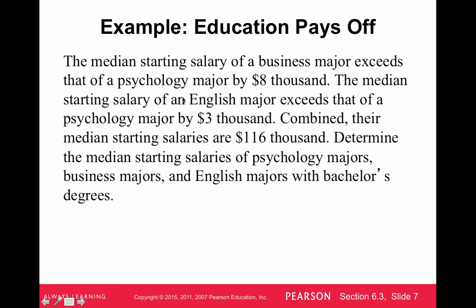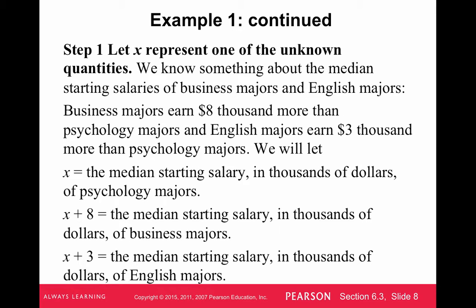The big thing here is which one to choose as x. All these sentences compare to psychology majors, so whenever you compare to something, it's good to call that the variable. So we're going to let x equal the mean starting salary of psychology majors. Then the statement that says business majors earn $8,000 more than psychology majors would be x plus 8, and these are all in terms of thousands of dollars. English majors earn $3,000 more than psychology majors, which is x plus 3.